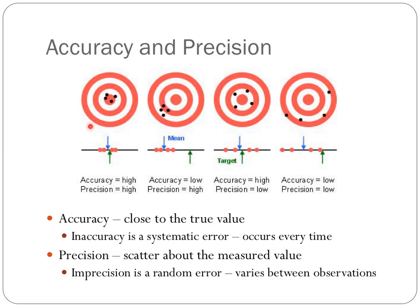Looking at the first target, we see that the arrows have landed close to the bullseye and they're grouped very closely together. So in this case, we have high accuracy because they're close to the desired value, close to the bullseye, and there's a very tight grouping of those arrow shots. The second bullseye provides us with an example of low accuracy with high precision. Because all of our shots are grouped close together, we have high precision, but the mean or the average of where all of those arrows are located is not close to the bullseye, which is the desired value. Therefore, our accuracy is low.